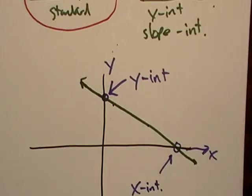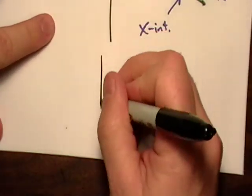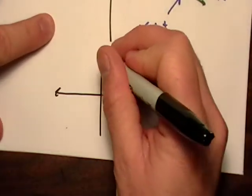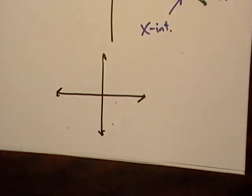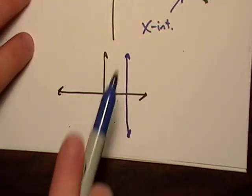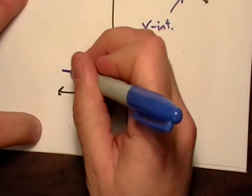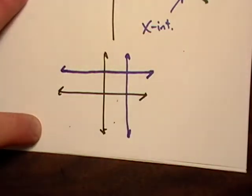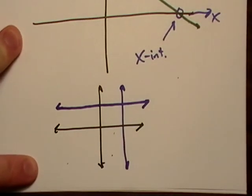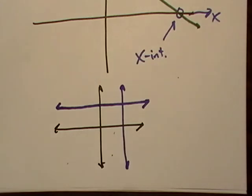A couple other things you need to know is that not always will a graph have both the x and the y-intercept. You could run into a situation where you have a line like this. Notice how it intersects the x-axis, but it does not intercept the y-axis. And likewise, you could also have a line like that - it intercepts the y-axis, does not intercept the x-axis.